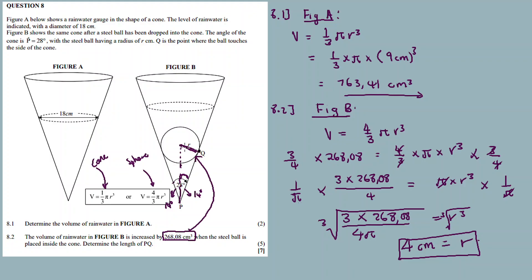The radius of the sphere is perpendicular to the side of the cone, giving us a 90-degree angle. So we have a right-angle triangle. We can use trig ratios with the angle of 14 degrees. Using tan: tan 14 degrees equals opposite over adjacent, which is r over PQ. So r (the opposite side) is 4 and PQ is the adjacent side.